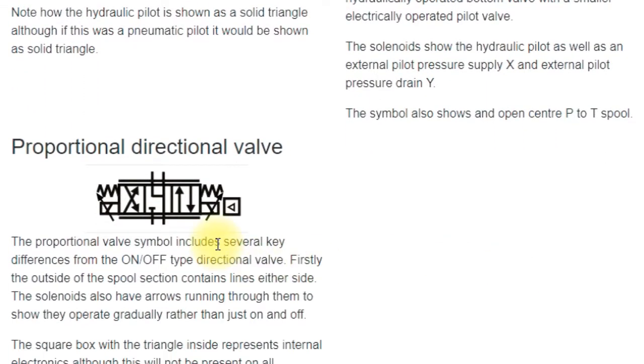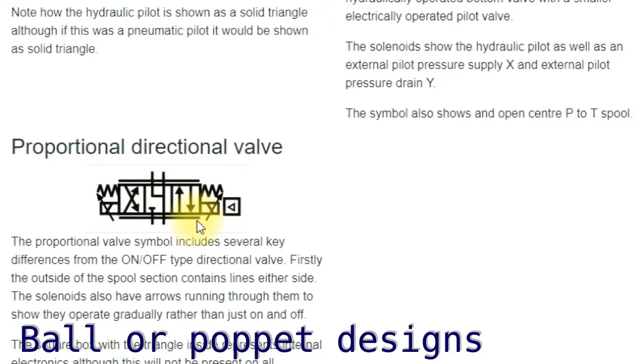What we don't want to talk about today are proportional valves. If you see this extra line, it's a proportional valve, perhaps arrows on the solenoid. It is a quite different valve, performs quite differently, so we'll talk about that again later.